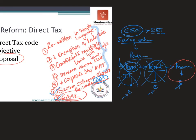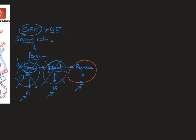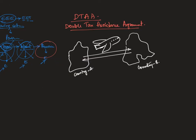Next, GAR — General Anti-Avoidance Rule. Before we understand GAR, let's understand Double Taxation Avoidance Agreement — DTAA. DTAA is a bilateral agreement between two countries. Country A and Country B sign an agreement which says that if a businessman or individual has investment in both countries and earns income in both, he shall not be taxed in both countries.